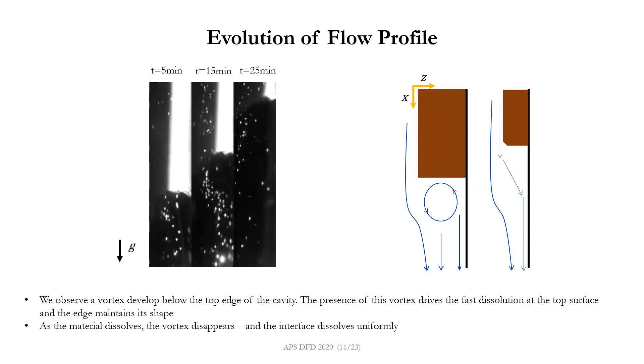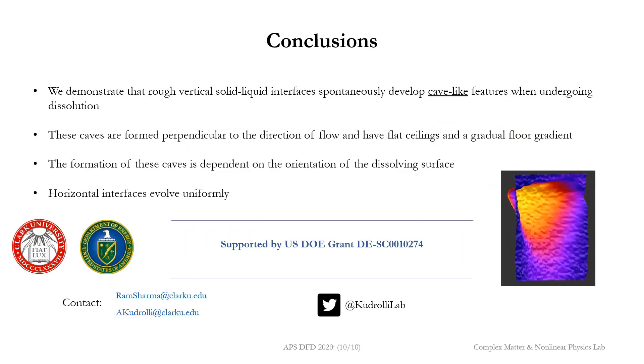So in conclusion we have some take-home messages. We demonstrate that rough vertical solid liquid interfaces spontaneously develop cave-like features when undergoing dissolution. We show that these caves are formed perpendicular to the direction of the flow. They seem to have flat ceilings and more gradual floor gradients. The formation of these caves is in fact dependent on the orientation of the dissolving surface, and it looks like horizontal interfaces evolve uniformly and do not seem to grow caves the same way. Okay thank you for your time. If you have any questions we'd be happy to take them.